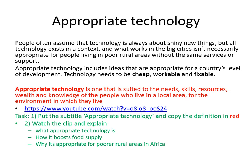People often assume technology is always about shiny new things, but all technology exists in a context, and what works in big cities isn't necessarily appropriate for people living in poor rural areas without the same services or support. Appropriate technology includes ideas that are appropriate for a country's level of development — it needs to be cheap, workable, and fixable when it goes wrong. The definition in red says it's technology suited to the needs, skills, resources, wealth and knowledge of the people who live in a local area for the environment in which they live. Copy out that definition, then watch the YouTube clip and: one, explain what appropriate technology is; two, say how it boosts food supply; and three, why it's appropriate for poorer areas.